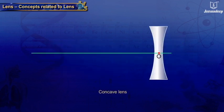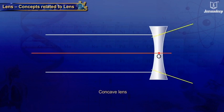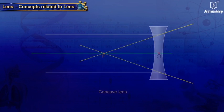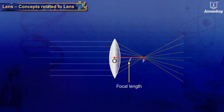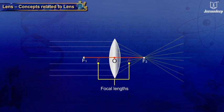In a concave lens, the rays of light parallel to the principal axis appear to diverge from the focus. The focal length, represented by small f, is the distance between the principal focus and the optical center of a lens. A lens has two focal lengths, f1 and f2.